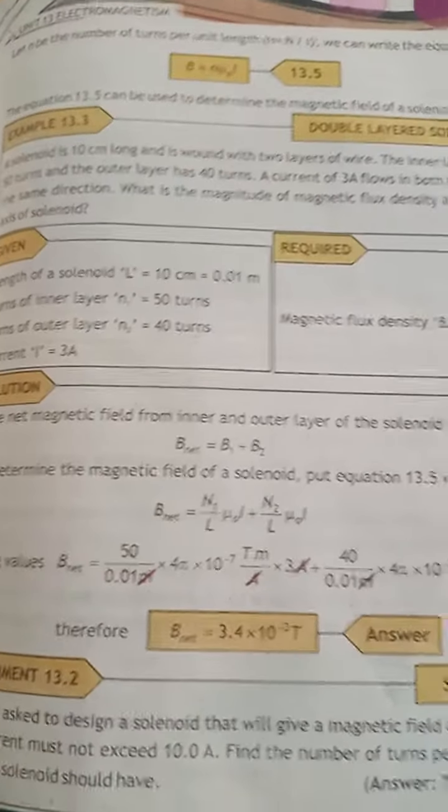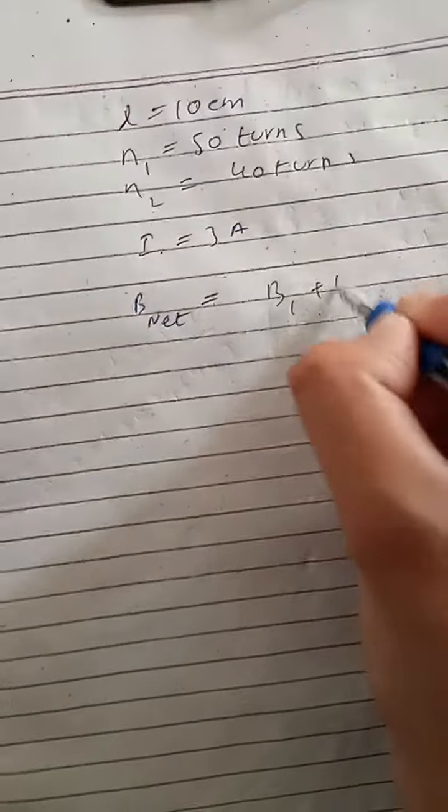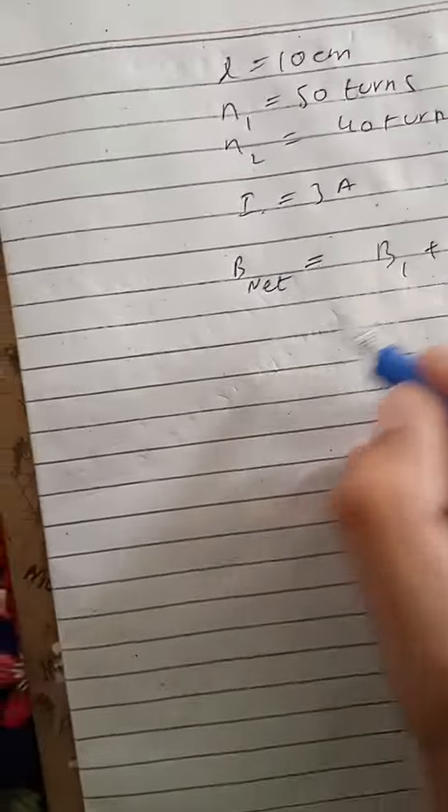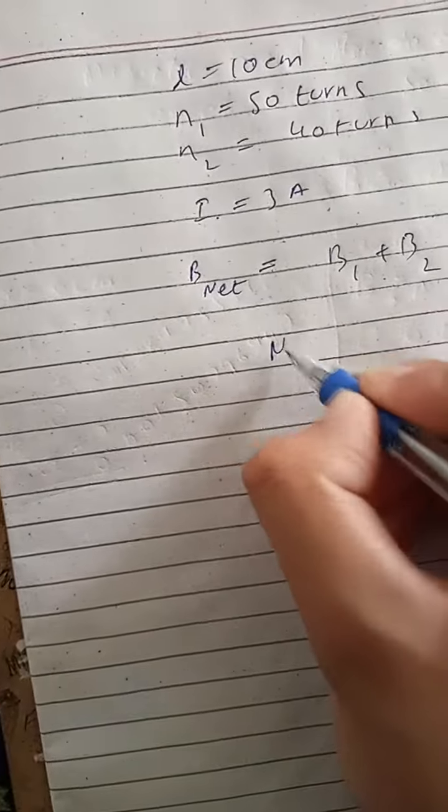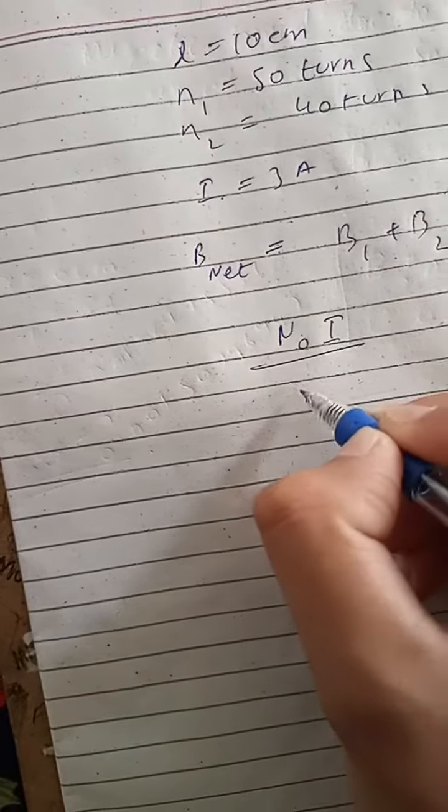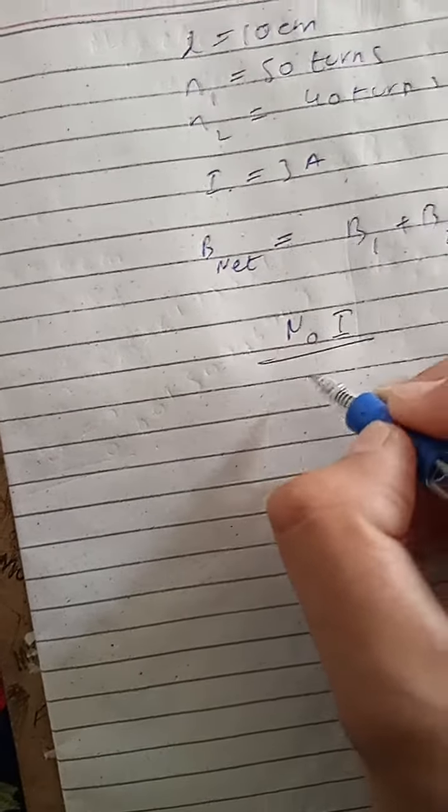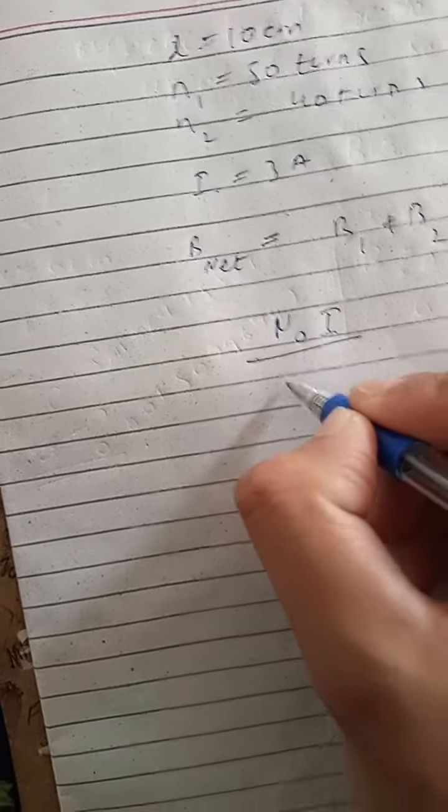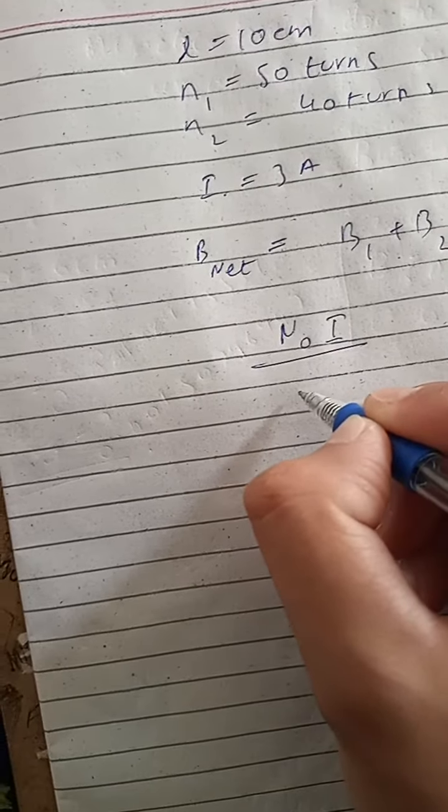I need B net. So B net is B1 plus B2. What is this? So I have a formula here, μ₀ I by L. What is it?